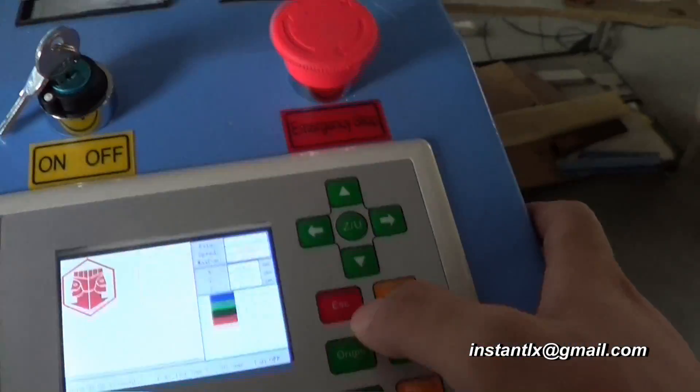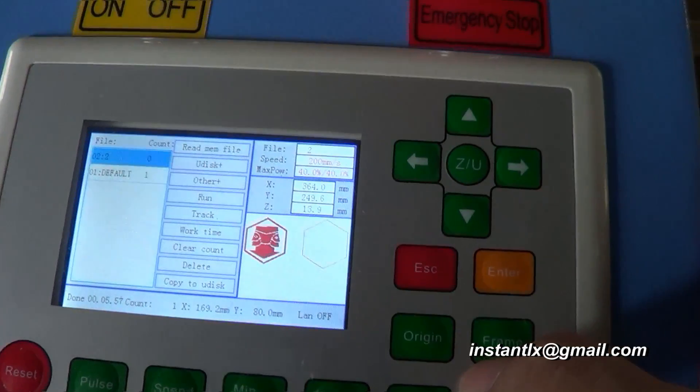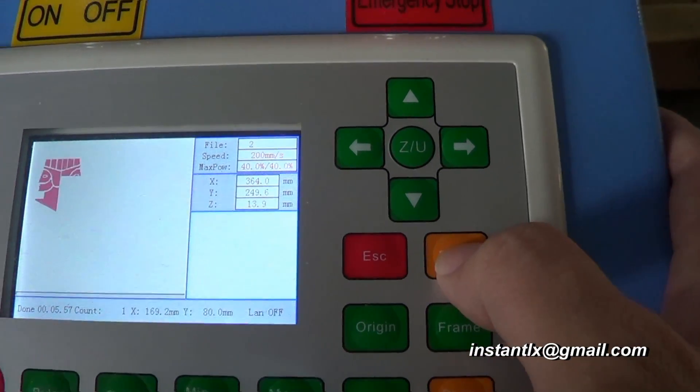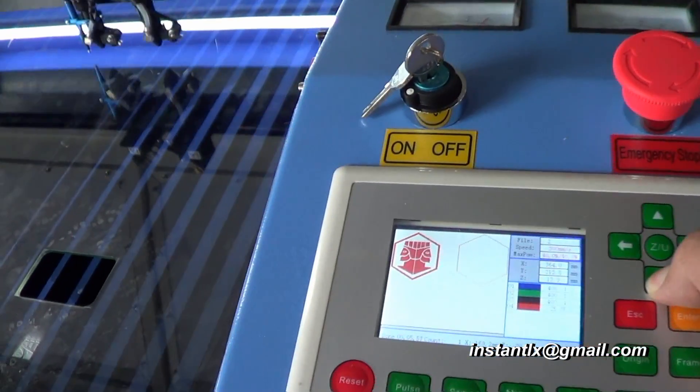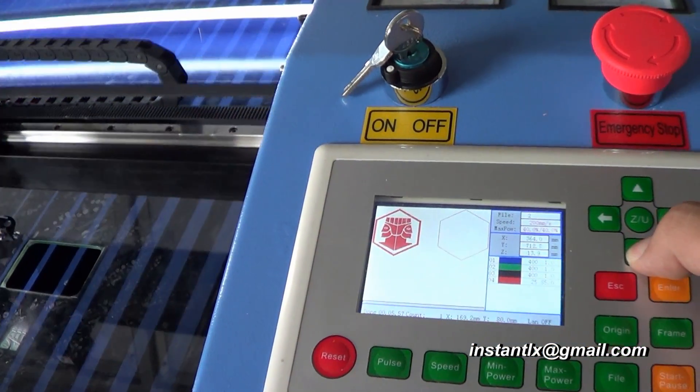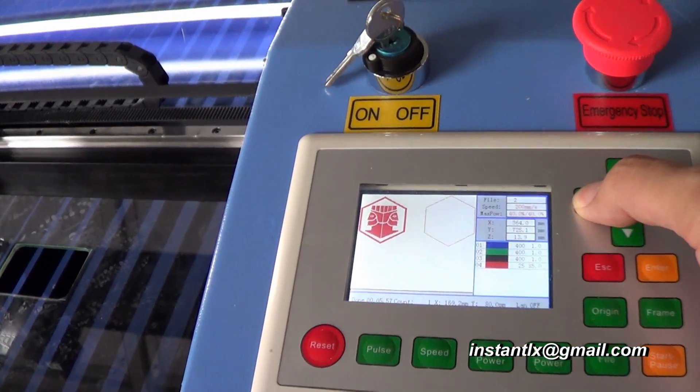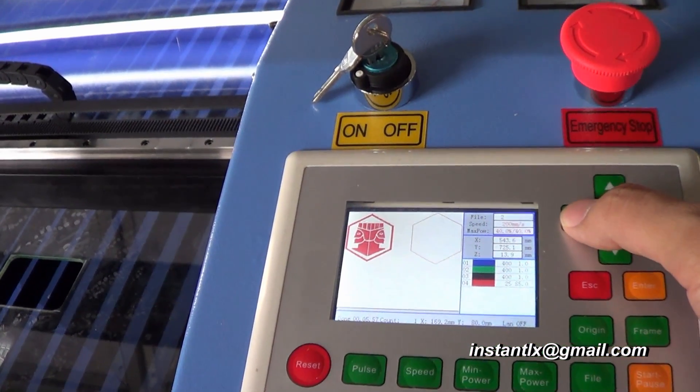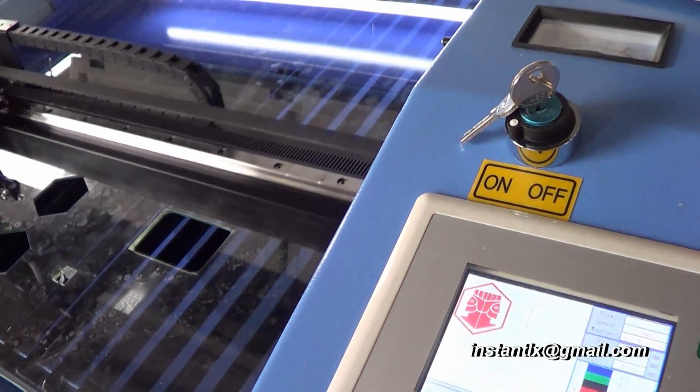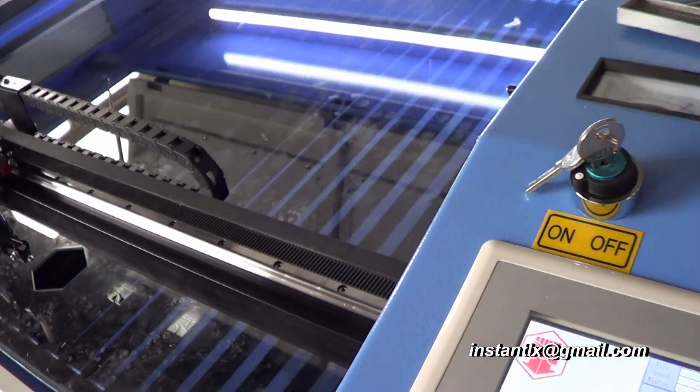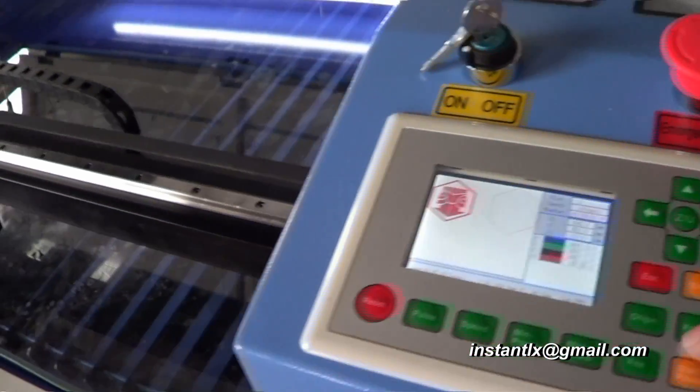So on the machine we press file. We choose the file and enter. And then we move the laser head to a new position. And then we press origin. We press frame.